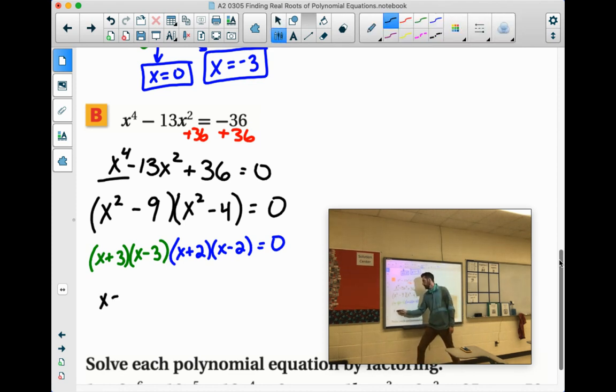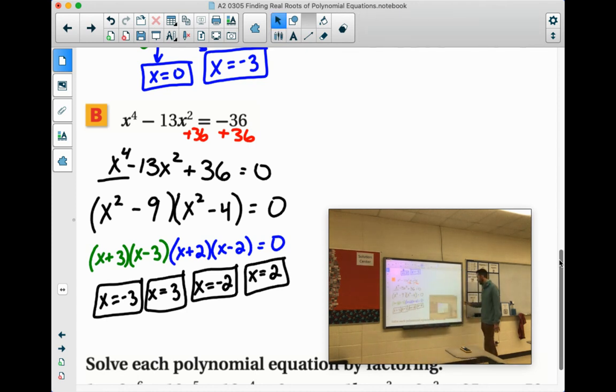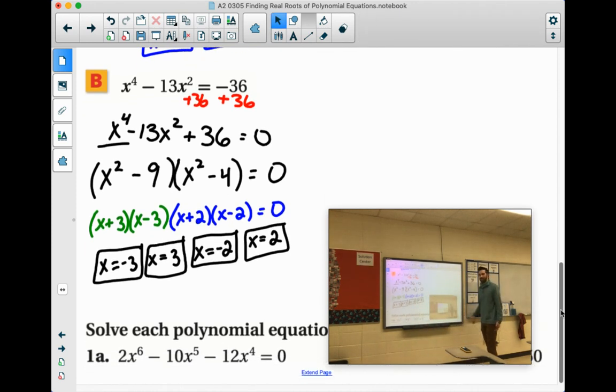So this will give us our four zeros here. x plus 3, x equals negative 3. x minus 3, x equals positive 3. x plus 2, x equals negative 2. And x minus 2, x equals positive 2. Look at that. Four different zeros. Good times.